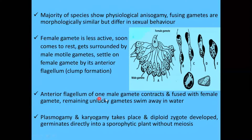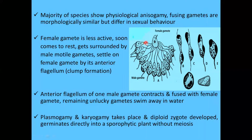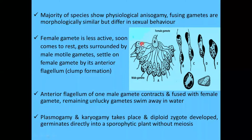The anterior flagellum of one male gamete contracts and it fuses with the female gamete. The remaining male gametes swim away. The contracting flagellum brings the male gamete into contact with the female gamete, and these two fuse together.